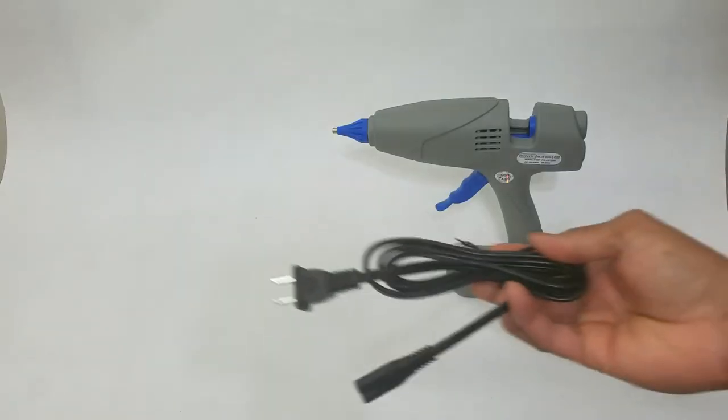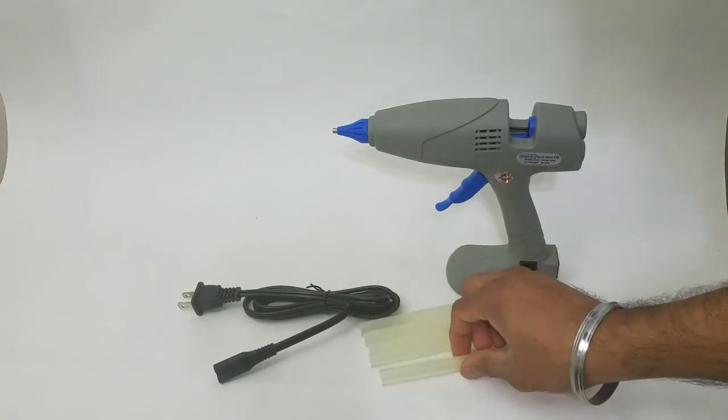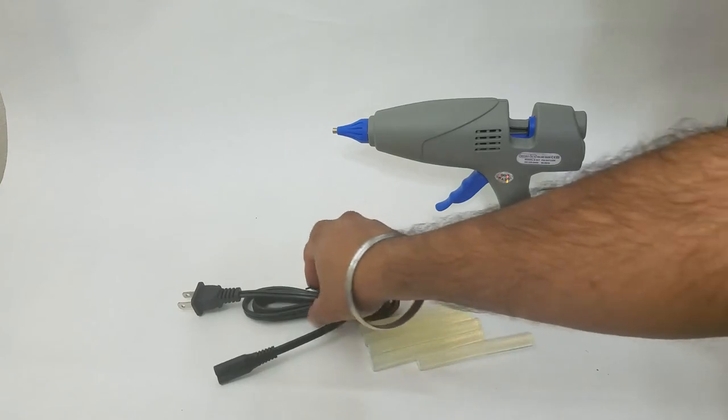Along with the glue gun, you're given a power cord and also glue sticks to get you started. Pretty simple, straightforward operation.